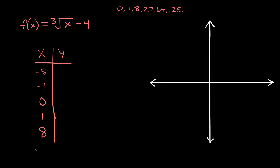Why did I specifically choose these numbers? Well, first of all these are all perfect cubes, and also these are some of the easiest perfect cubes that you can evaluate because they're smaller numbers. Also if you notice the pattern it's symmetrical — negative 8 and positive 8 on the outsides, negative 1 and positive 1, and then 0 in the middle. So whenever you have just an x inside your cube root, these are generally the numbers you're going to want to use, in exactly this order.